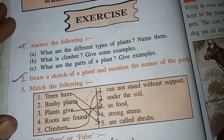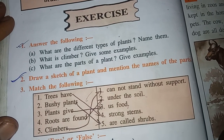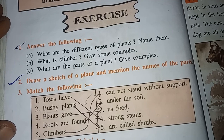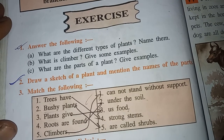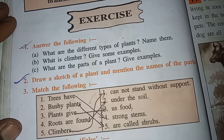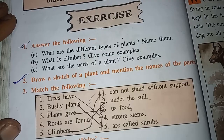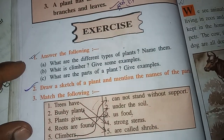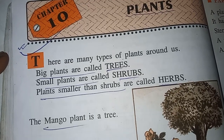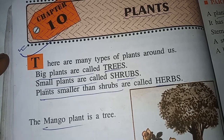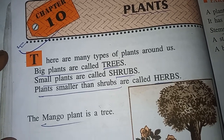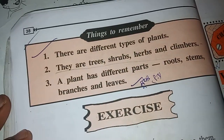What are the different types of plants? There are many types of plants around us: trees, herbs, and climbers.